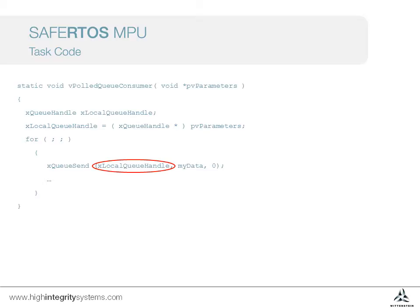The copying of data onto or from a queue is possible because it's done by a kernel call, which raises the privilege prior to the operation and lowers it again afterwards.